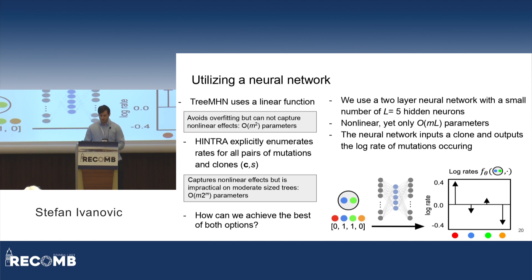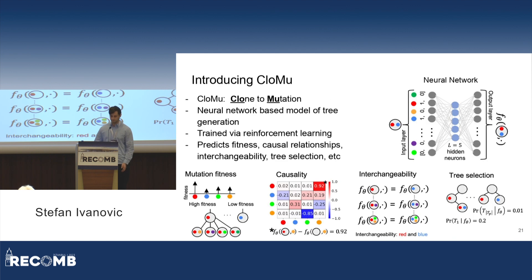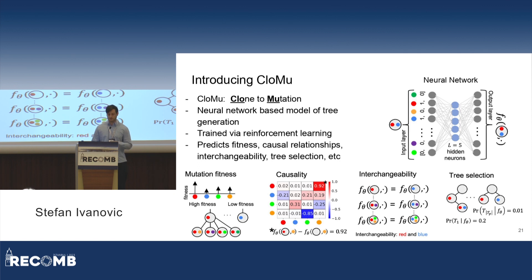The neural network, as shown in the diagram, takes in a clone represented by a vector of ones and zeros and outputs the log rate of mutations on that clone. We introduce CLOMU — named because it's clone to mutation. It's a neural network-based model of tree generation, trained via reinforcement learning, and it accomplishes a wide variety of prediction tasks including fitness, causal relationships, interchangeability, tree selection, and more.